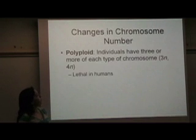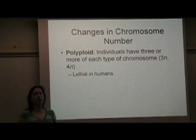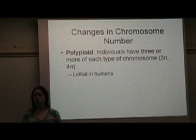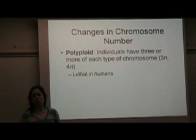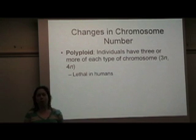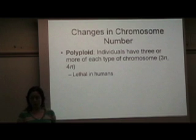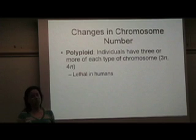Changes in chromosome number — one possibility is polyploidy. Polyploidy means that instead of an individual having two copies of one chromosome, they have three or they have four. Polyploidy is lethal in humans. We do see it in a lot of flowering plants; strawberries, for example, are octoploid — they have eight copies of each type of chromosome — but polyploidy is not possible in humans.